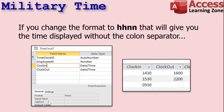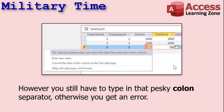You can change the format property to just HHNN. Remember, N is for minutes because M is already used — that's for months. So if we put the format property in as HHNN, the time will be displayed without the colon separator. However, you still have to type in that pesky colon, otherwise you get an error message.